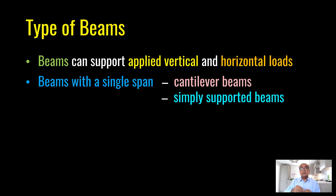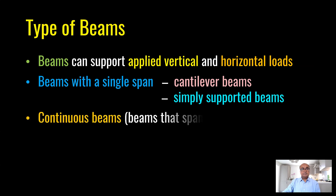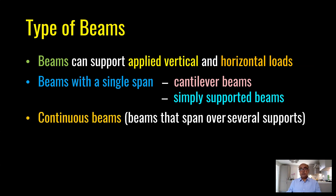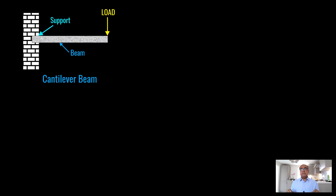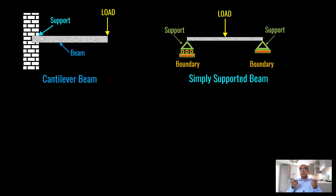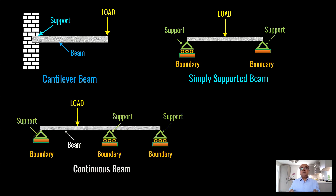Beams with a single span are termed as cantilever beams or simply supported beams. Continuous beams have more than two supports. A cantilever beam is fixed on one side and free on the other, and any type of load can be applied. A simply supported beam rests on two supports and is allowed to rotate. A continuous beam has more than two supports — three, four, five, or unlimited.